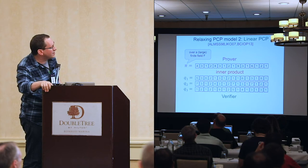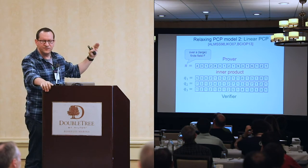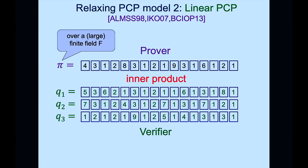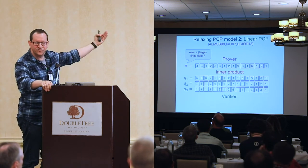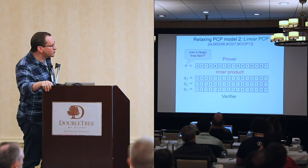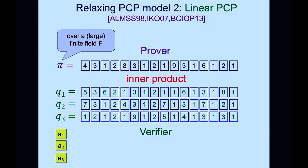The second type of relaxation underlies the super-succinct and efficiently verifiable pairing-based SNARKs: relaxing the type of queries from point queries (reading individual symbols) to linear queries, which take an inner product of the proof vector with a query vector. Think of the proof as a vector over a large finite field, and each verifier query as specifying some linear combination of the entries of the proof π. This is called a linear PCP.